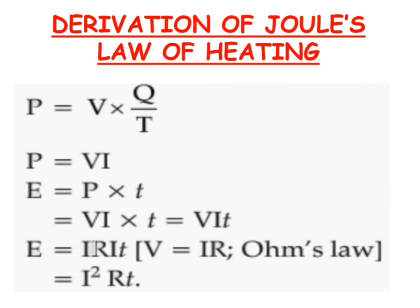Now we are going to start with the derivation of Joule's Law of Heating. We know that the formula of power is P = V × I. We also know that I = Q/T, that is current equals charge upon time. So we substitute I as Q/T into the power formula. From energy, we know that energy equals power multiplied by time. So energy equals V × I × T. Now V can be written as IR from Ohm's Law, so substituting: energy equals IR × I × T.